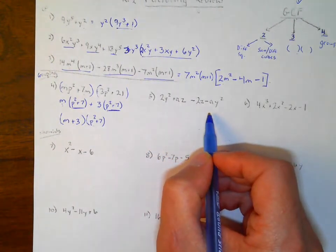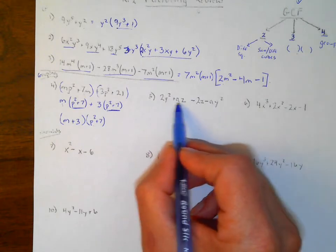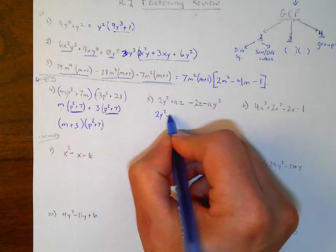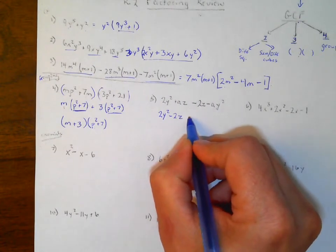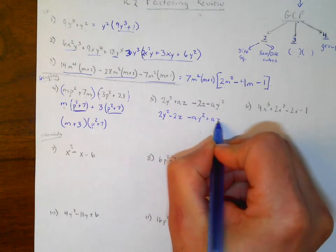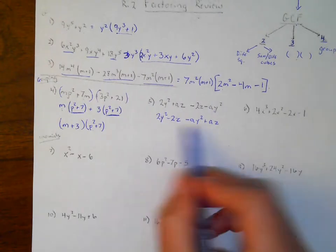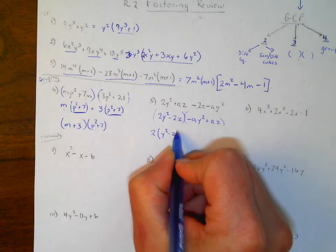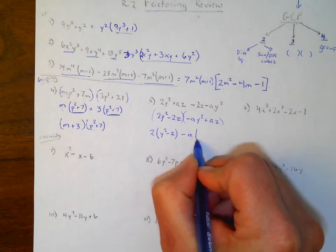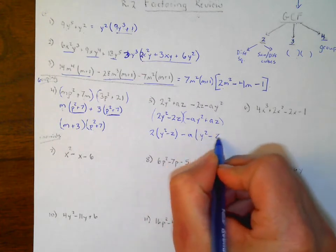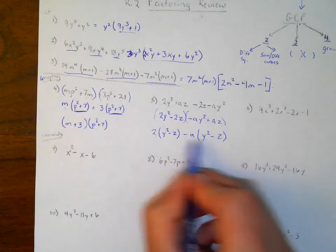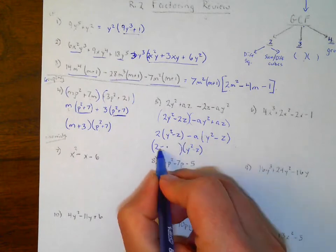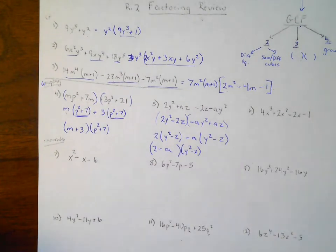This next one isn't quite in the right order because I can't take anything out of those pairs. So I rearrange these — I'll put this term with that one, then have the negative ay² and the az together. If I factor a 2 out of the first group, I have y²−z. From the second group, I take out a negative a, which makes positive y² and negative z. I had to rearrange so that both groups give the same binomial (y²−z), and then 2 and −a are collected as the other factor.